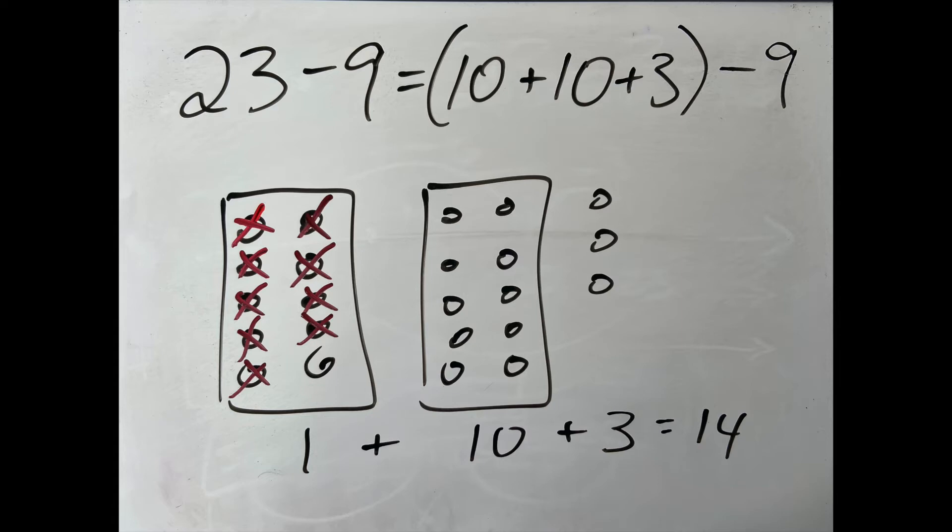Maybe you'll actually think of the 23 as being 10 and 10 and 3, and you'll just subtract the 9 from one of the tens, and you'll have 10 minus 9 is 1, so now it's 1 and 10 and 3, and that's 14.